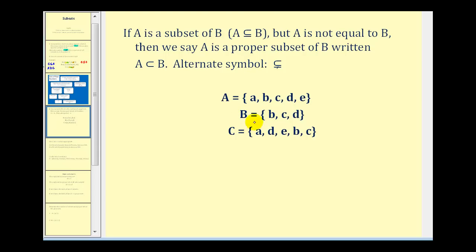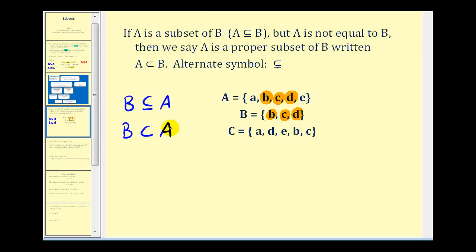Taking a look at these three sets, let's look at set A and set B first. Notice that all of the elements in B are also in set A, but they're not equal sets. So we can say that B is a subset of A, and since the two sets are not equal to each other, we can also say that B is a proper subset of A.